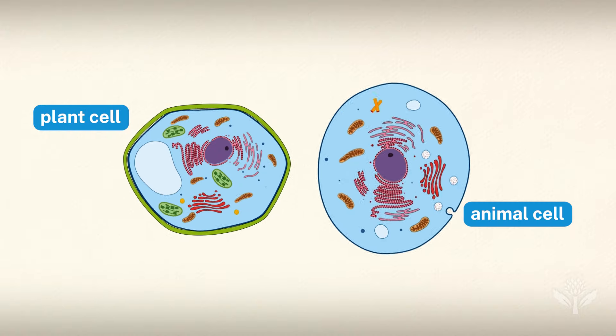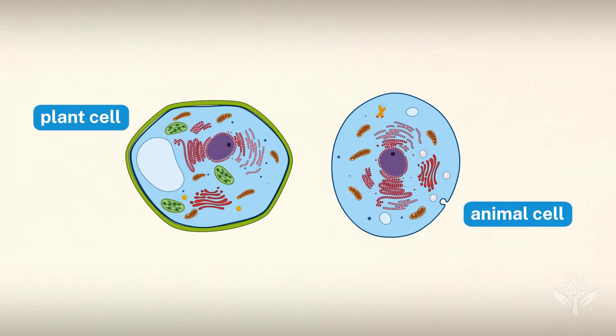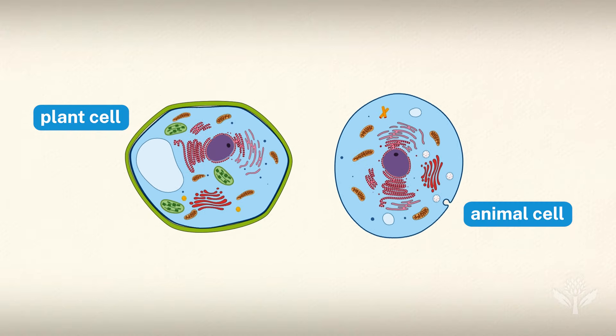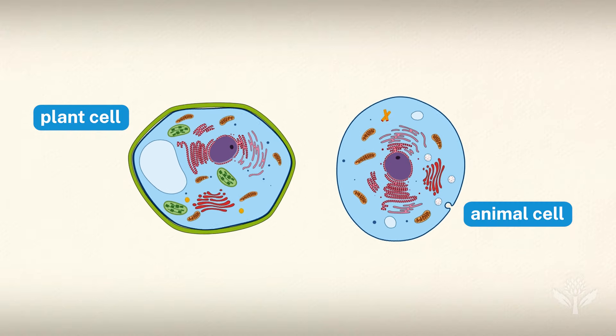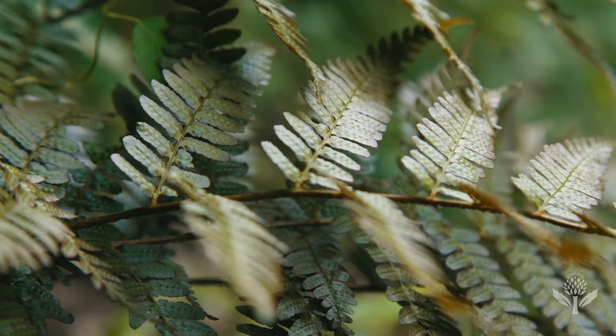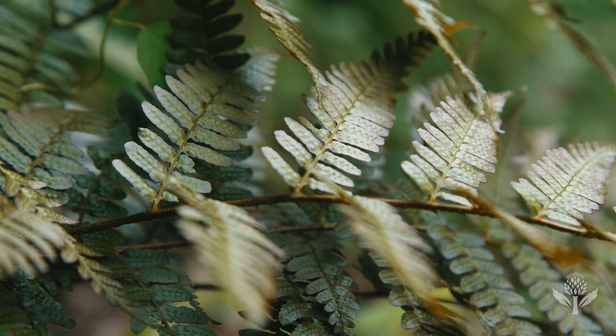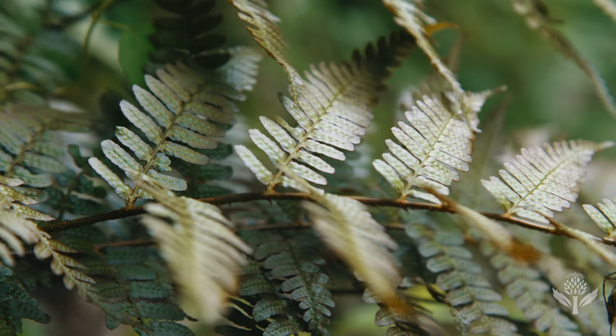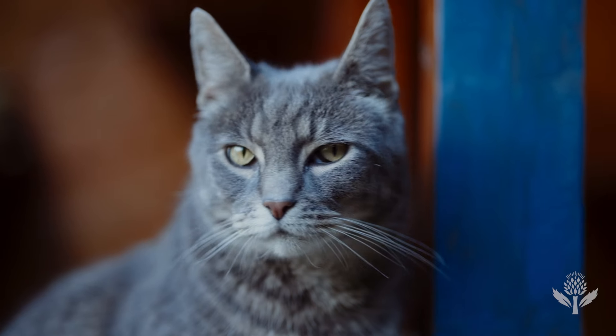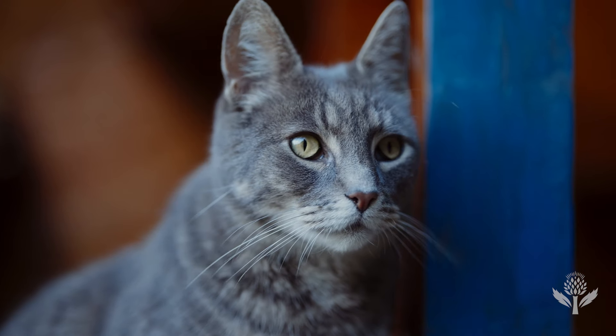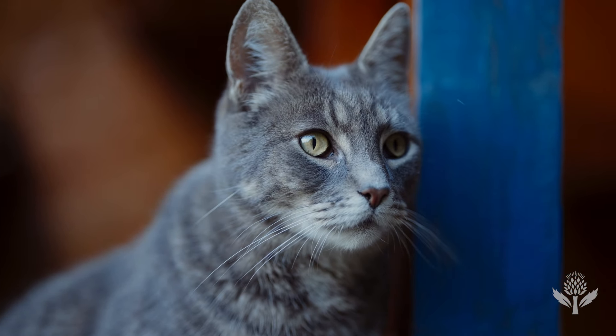The cells of plants and animals contain a lot of the same components, but it's the key differences that make plants leafy and green, and animals, well, not.